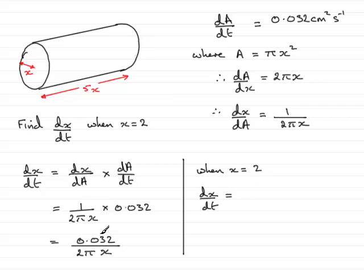And so what I have is 0.032 all over 2 times pi times the x value of 2. And if you work that out, you find you get 0.0025464 and so on. And we're asked to give this to three significant figures. So giving that to three significant figures is going to be 0.00255.